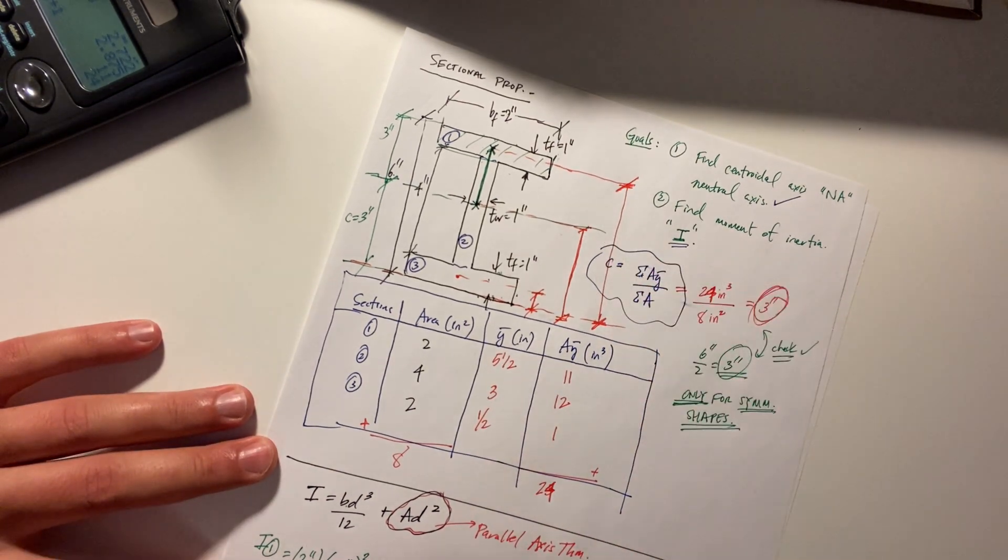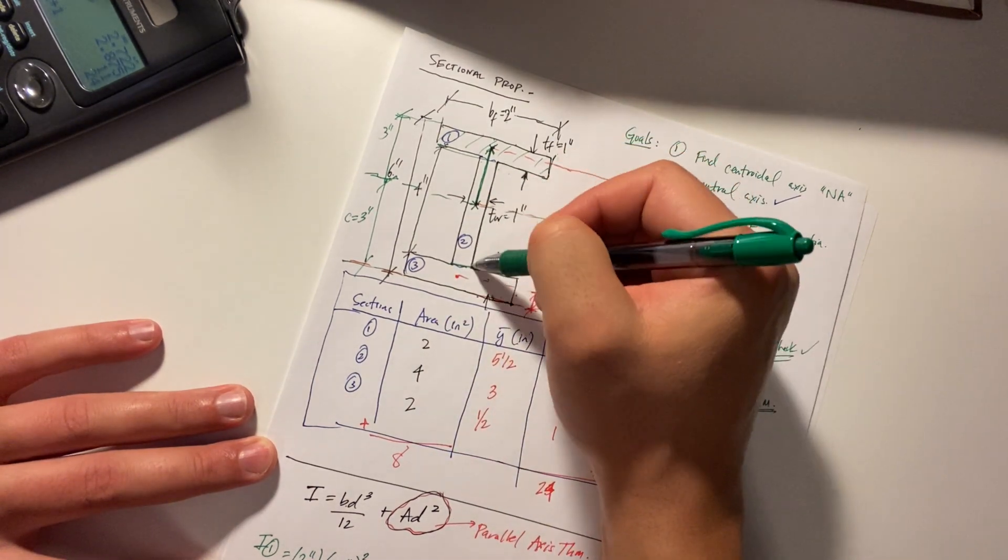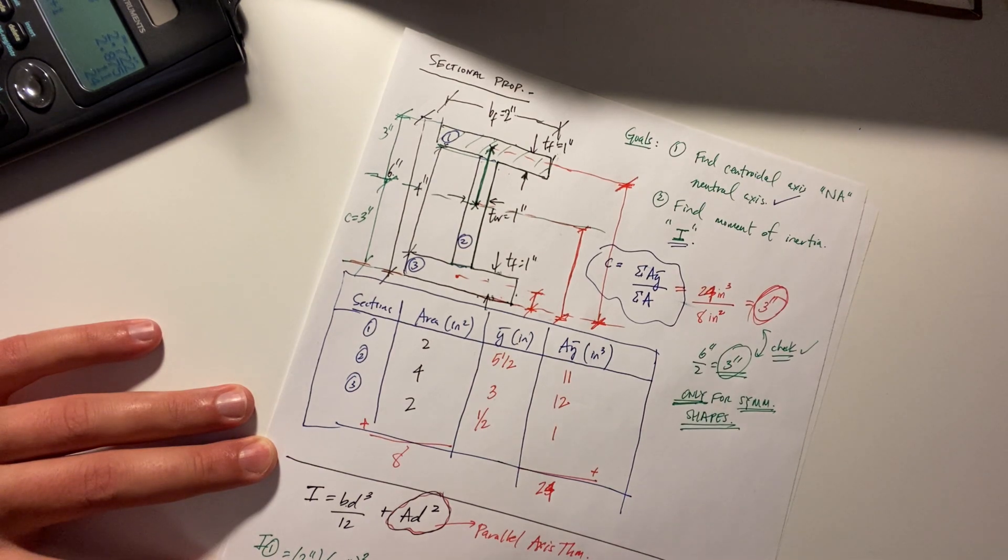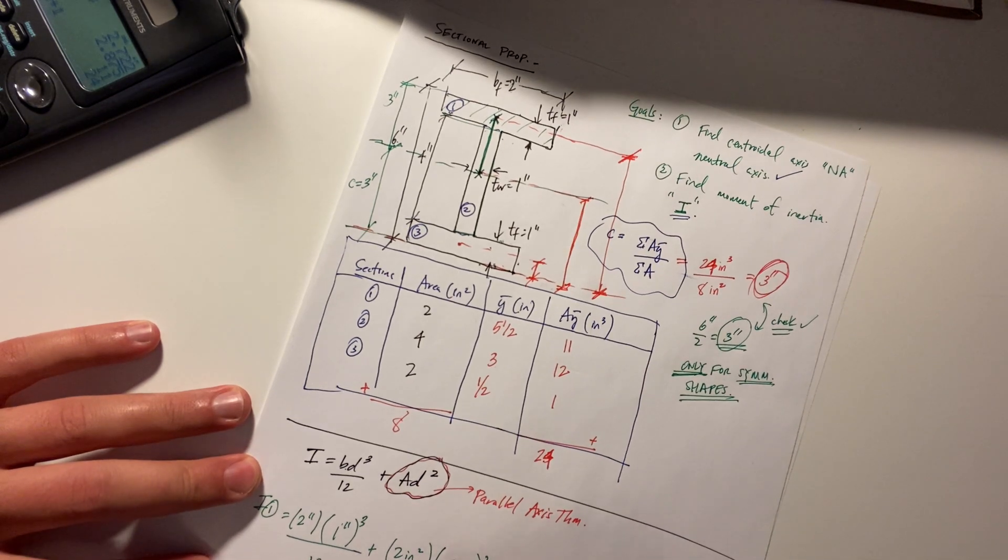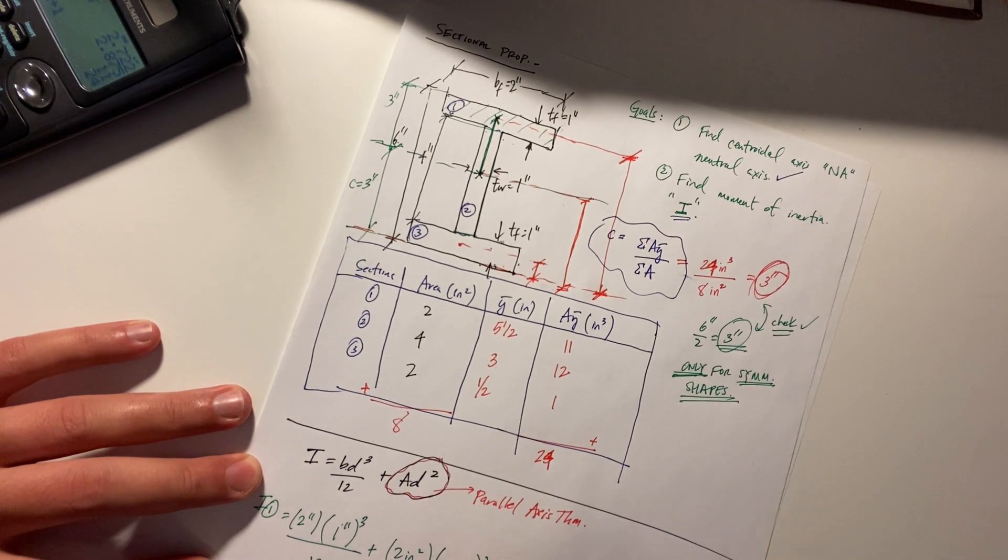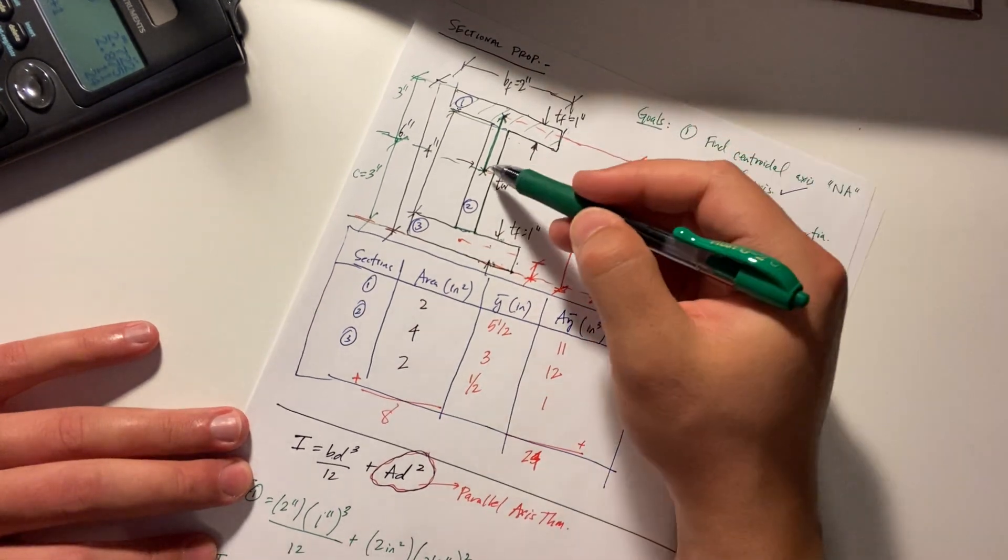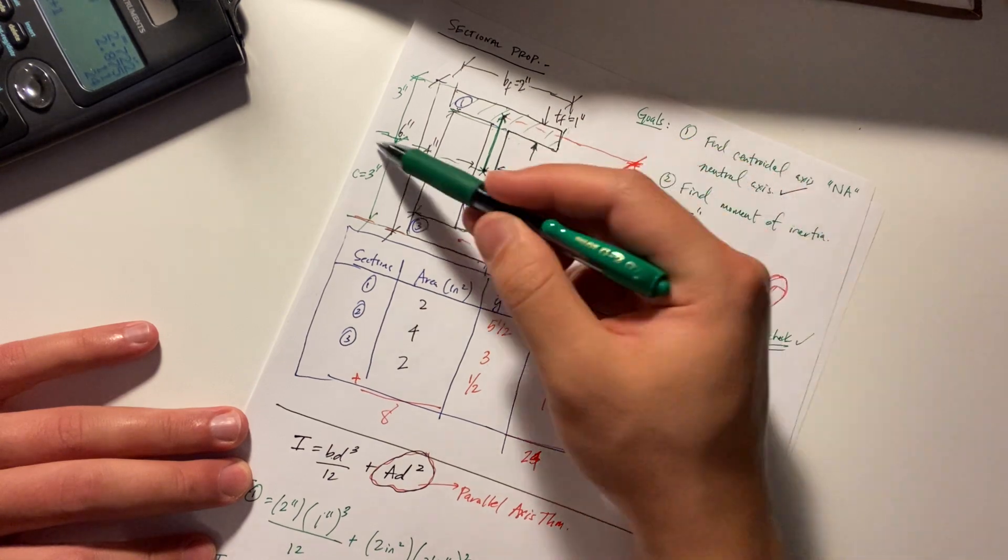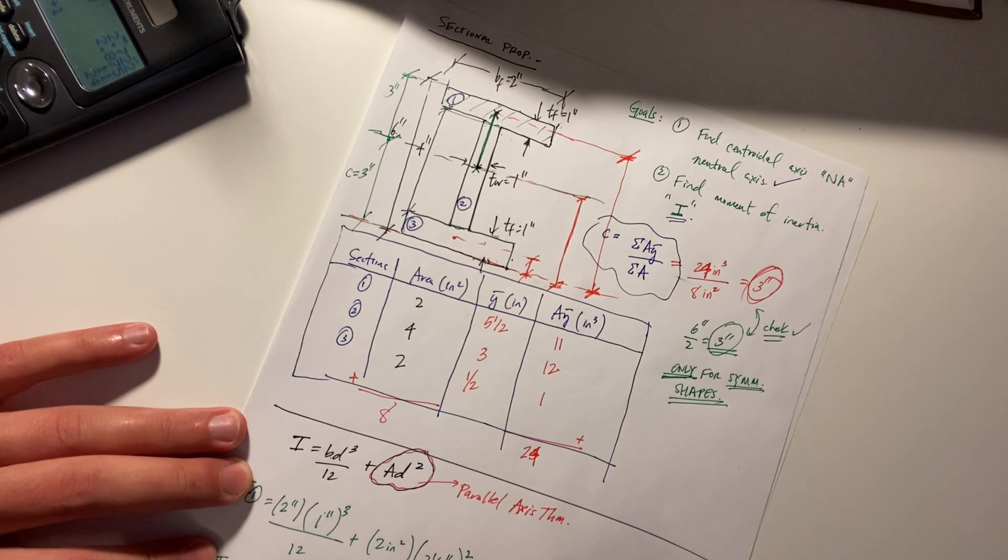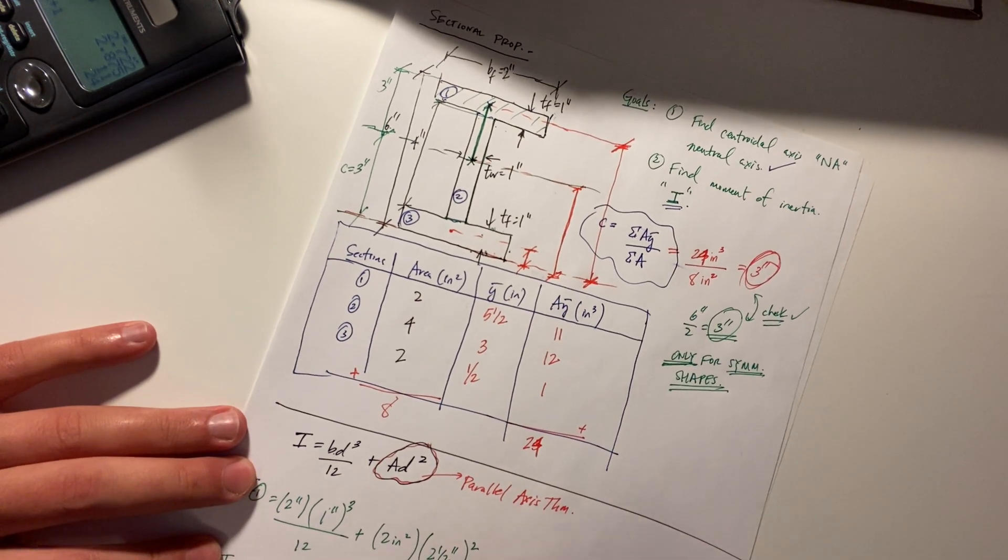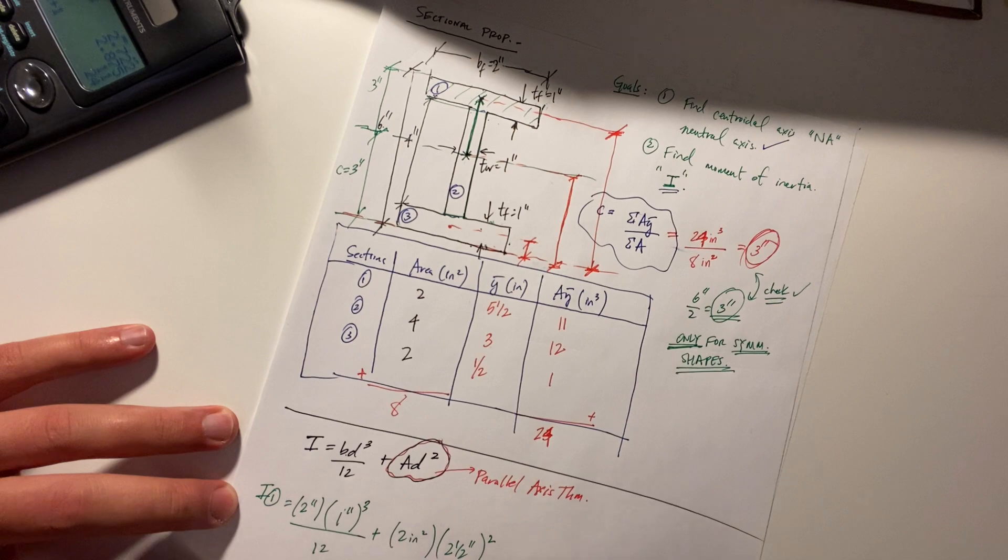Okay i2 equals i2 b one inch d four inches cubed over 12 plus area four inches squared what's our d hmm well looks like they're both at the same point so our d got to be zero what's zero squared zero zero times that zero ah parallel axis kind of makes sense now huh